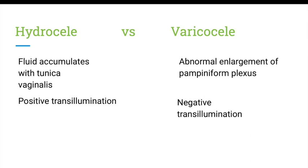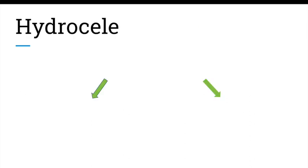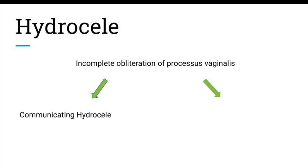There are two types of hydroceles: communicating and non-communicating. If a patient has a communicating hydrocele, it is very important to rule out an indirect inguinal hernia, because both are caused by an incomplete obliteration of the processus vaginalis and both increase in size with Valsalva or on standing.